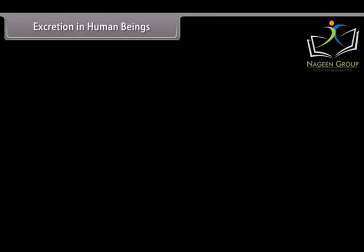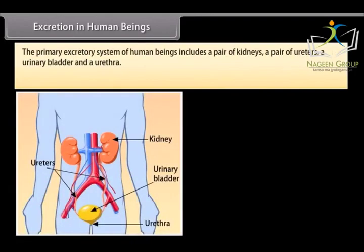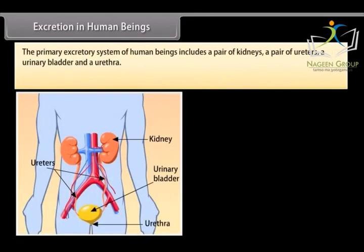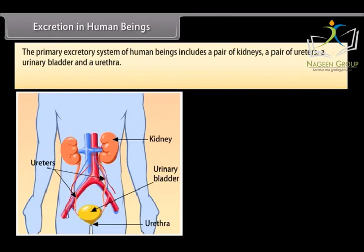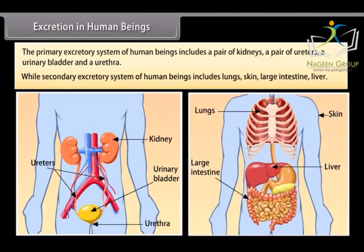The primary excretory system of human beings includes a pair of kidneys, a pair of ureters, a urinary bladder, and a urethra. The secondary excretory system of human beings includes the lungs, skin, large intestine, and liver.